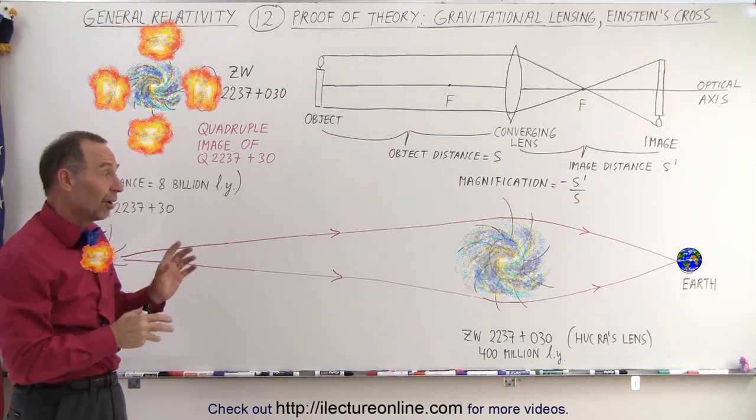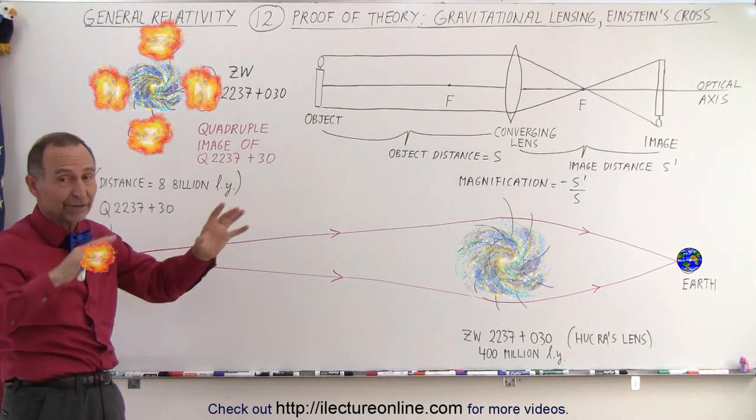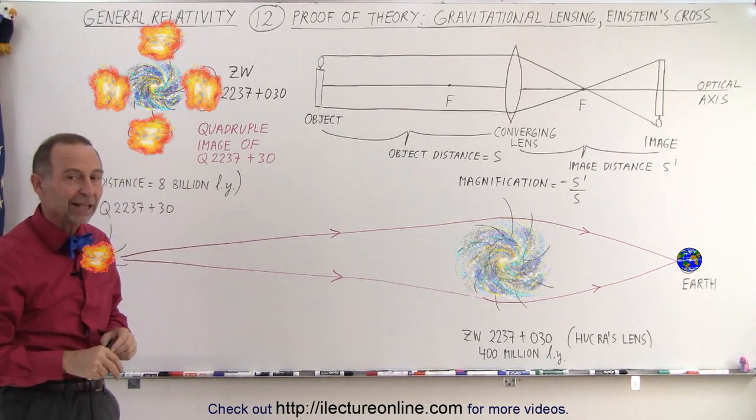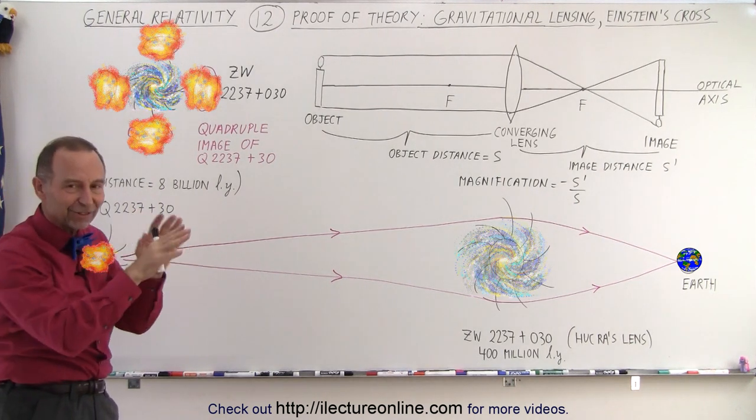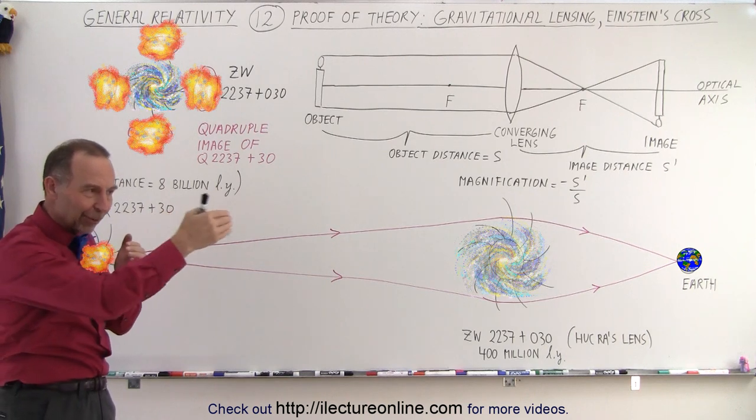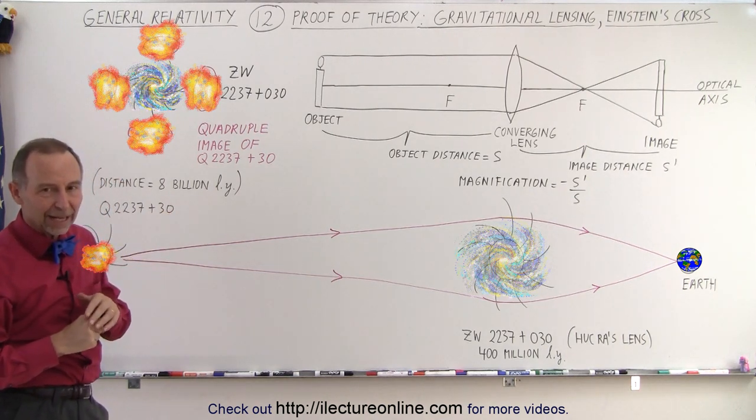I've seen pictures of places where there's like 10 or 12 or 14 different pieces of images of a single galaxy, especially when the light goes through a cluster of galaxies that are all pretty close to the direct line of sight between the galaxy we're looking at and us.